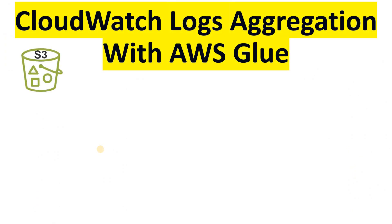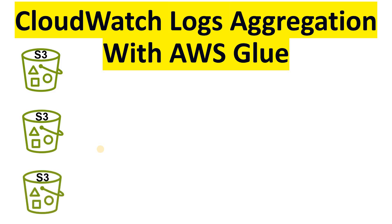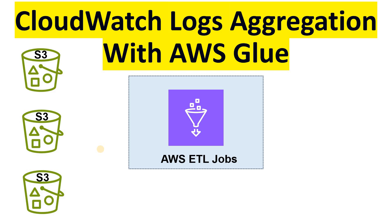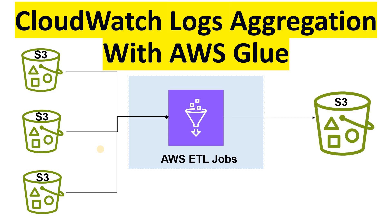The second part of this solution, which is not covered in this video, is aggregating all those logs from different regional S3 buckets using an AWS ETL pipeline with AWS Glue jobs, storing them in a centralized S3 bucket. From there you can use it for automation, analytics, or even machine learning purposes.